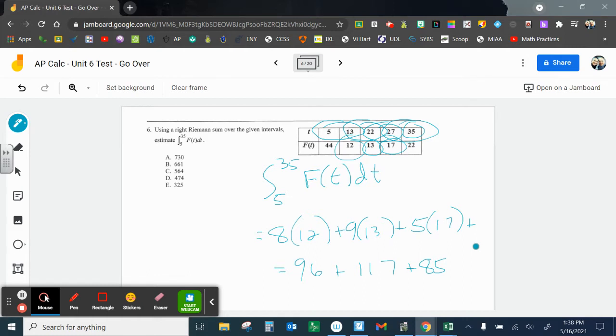Lastly, 27 to 35 is 8. Use the right-hand side, 22. 160 plus 16 is 176. Use our calculator, add these up. And we should get D, 474. Let me just confirm that. 200, 280, 380, 450, 461, 468, 474. Perfect. That's what we were looking for.